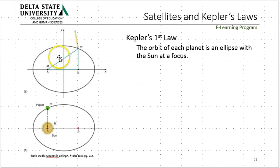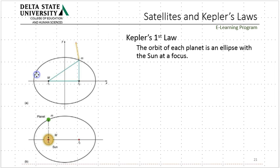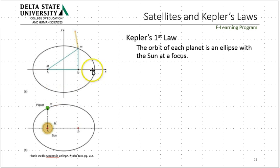Each planet orbits in an ellipse with the sun at a focus. An ellipse has two foci. You've probably done this with a couple of pencils — you take a string of a given length, wrap it, have a pen stuck into the page, go around, and you form an ellipse. The ellipse that the Earth goes around is very close to a circle. We normally think of it as a circle, but Kepler was able to determine that all the planets are going around in an ellipse.